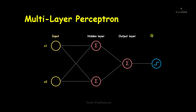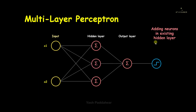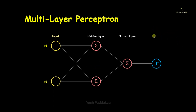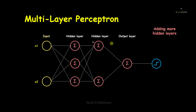The next condition is adding neurons in the existing hidden layer. We can have multiple neurons in the current hidden layer — a single hidden layer with multiple neurons inside it. As neurons are added, each gets connected to every input as well as to the neurons in the next layer — the output layer. We'll see how this affects the model in the upcoming videos.